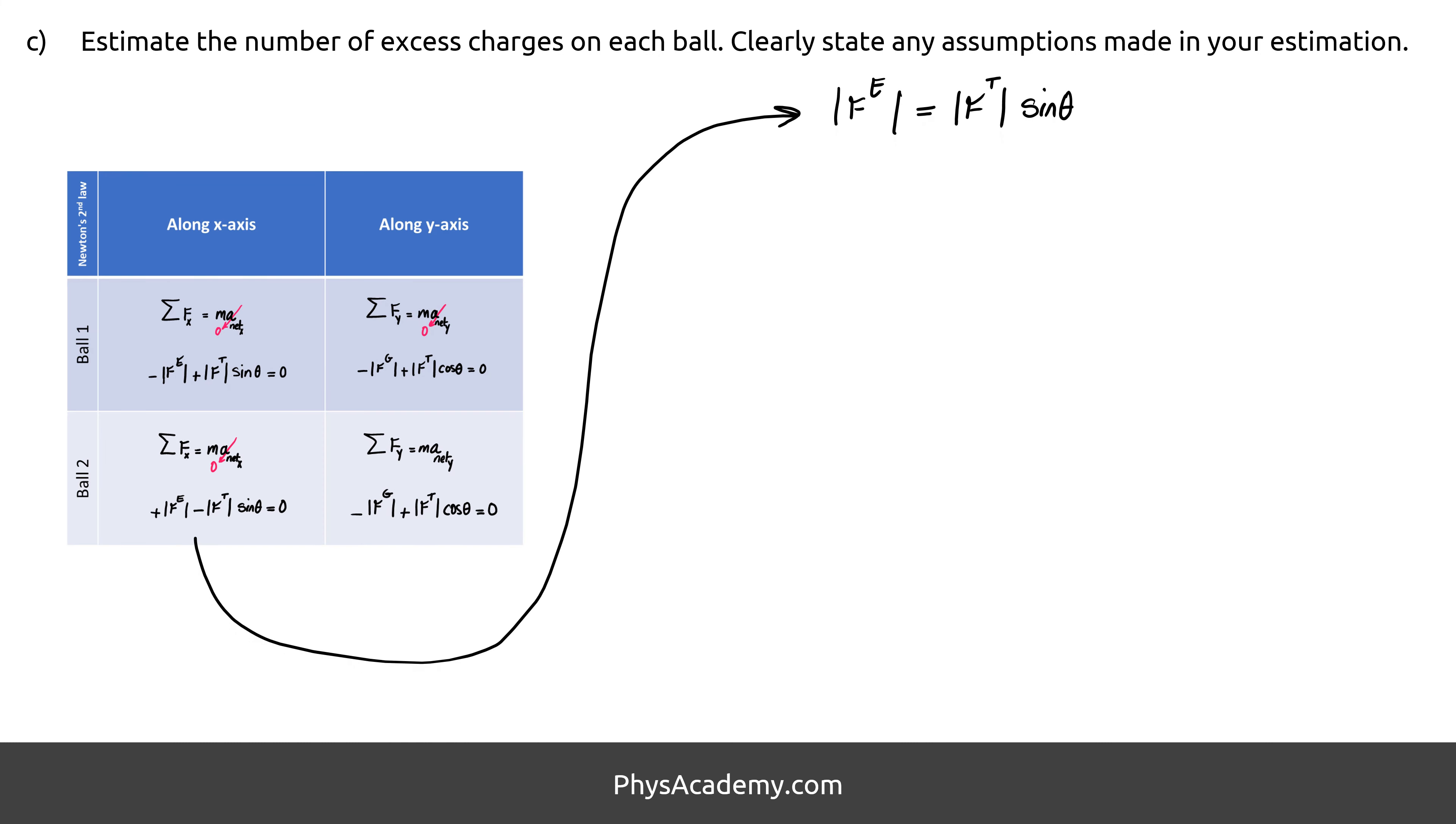Let's start with Newton's second law equation of ball 2 along the x-axis. We already know the left-hand side, F_E from our previous calculation is K times Q squared divided by L squared. On the right-hand side, we can replace F tension with F gravity divided by cosine theta from Newton's second law equation of ball 1 along the y-axis. Sine theta divided by cosine theta is tangent of theta.